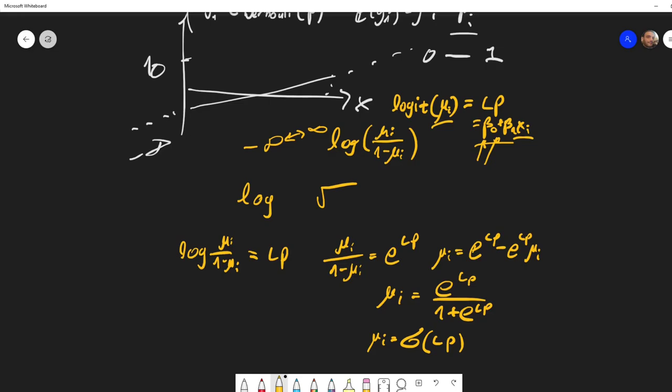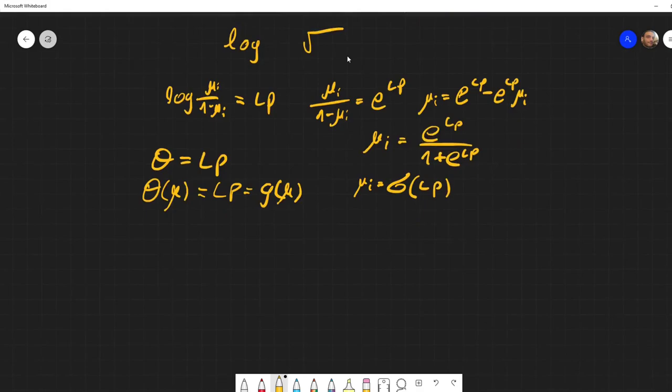There is a special type of link function that is called the canonical link function. This link function is the one that says that the natural parameter—I will introduce this when we talk more about the exponential family—but each exponential family has a natural parameter to it. And if you just relate the natural parameter to the linear predictor, you get the canonical link function. So the natural parameter is some function of the mean, and if you take this to be your link function, then it simplifies the calculations a bit and the whole math behind the generalized linear model.